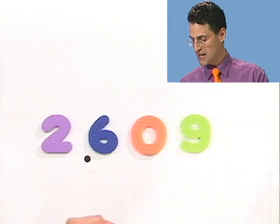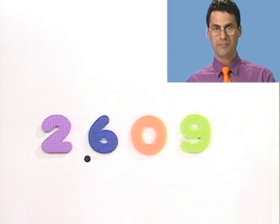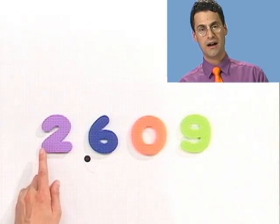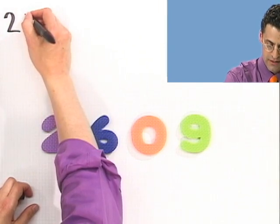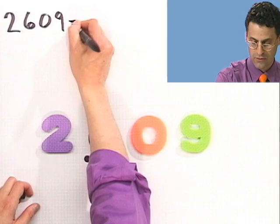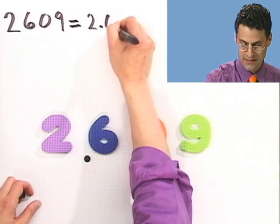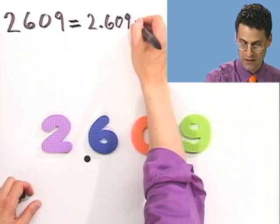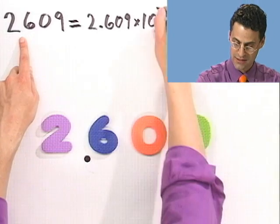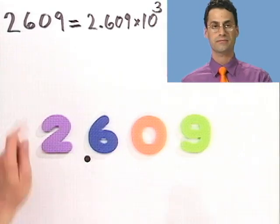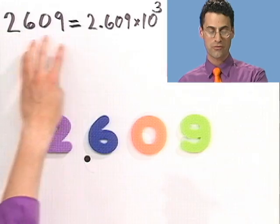The point is, scientific notation allows us to write numbers that are big or very small as just a number that's between 0 and 10, times 10 to the right power. So for example, 2,609 would equal 2.609 times 10 to the third. This is the scientific notation for this number.